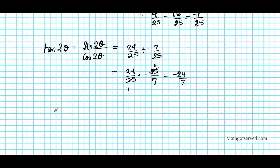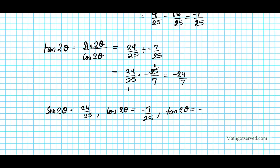So the answers for question 2 organized: sine 2θ = 24/25, cosine 2θ = −7/25, and tan 2θ = −24/7.